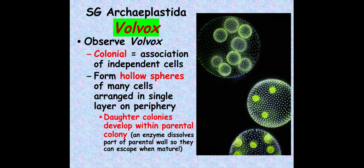Also in Archaeplastidia is Volvox, a colonial organism, meaning each of its cells could live independently. But when together in that hollow sphere, they live and work as a team — arranged in a single layer toward the outside so they can get sunlight for photosynthesis. When it's time to reproduce, cells inside the sphere grow larger and dissolve the outer mucous capsule, and the individual cells break off to form their own colony.